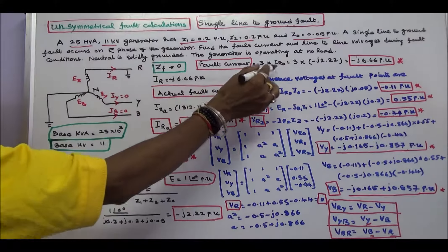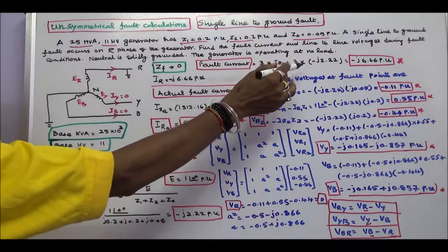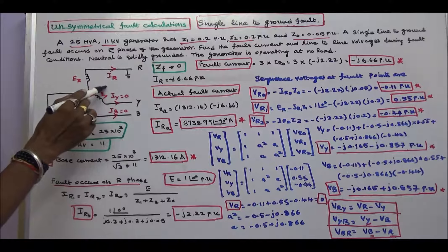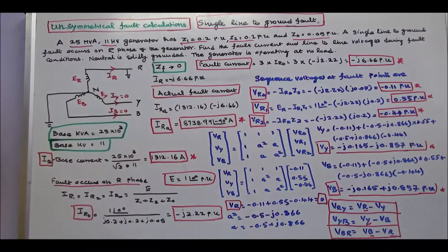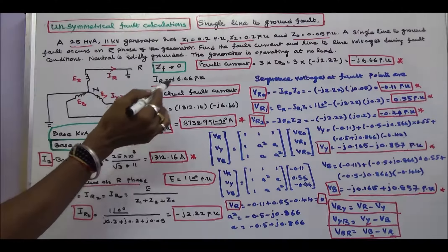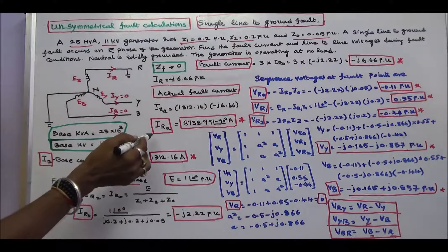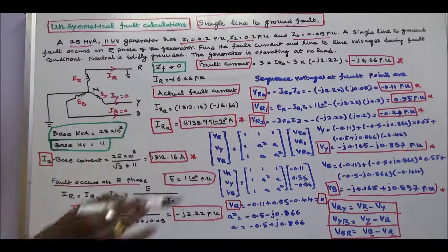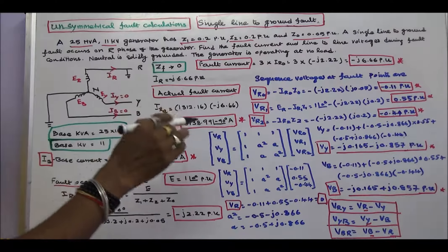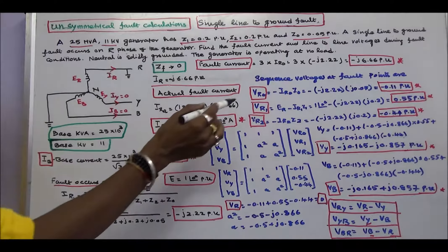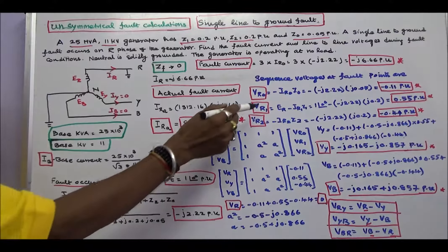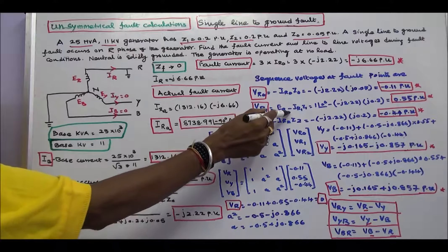The fault current is three times the zero sequence current: 3 into minus j 2.22, which equals minus j 6.66 per unit. Therefore the fault current IR equals minus j 6.66 per unit. Knowing the base current, the actual fault current IR equals base current multiplied by per unit current, giving 8738.99 angle minus 90 degrees amps.